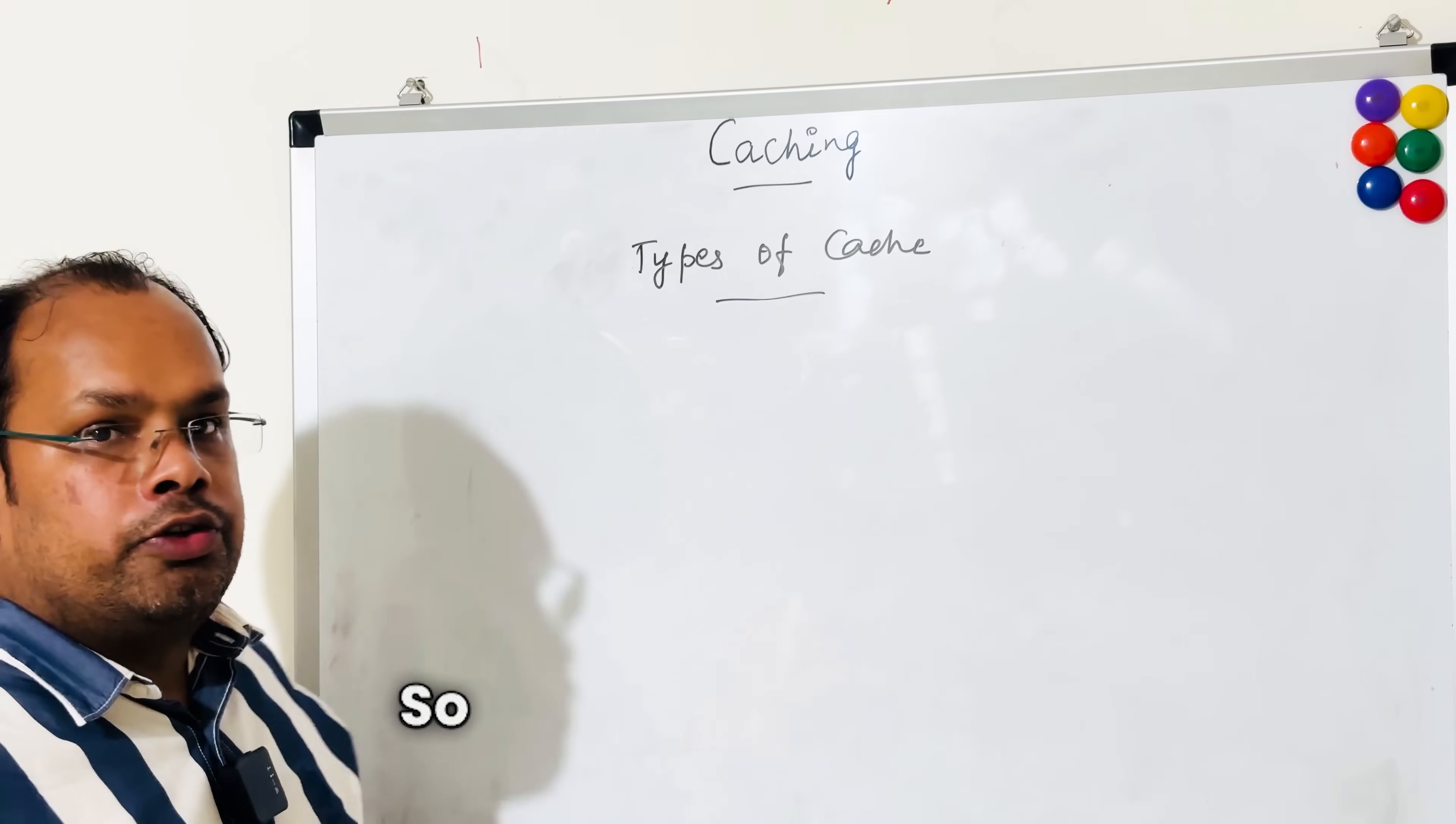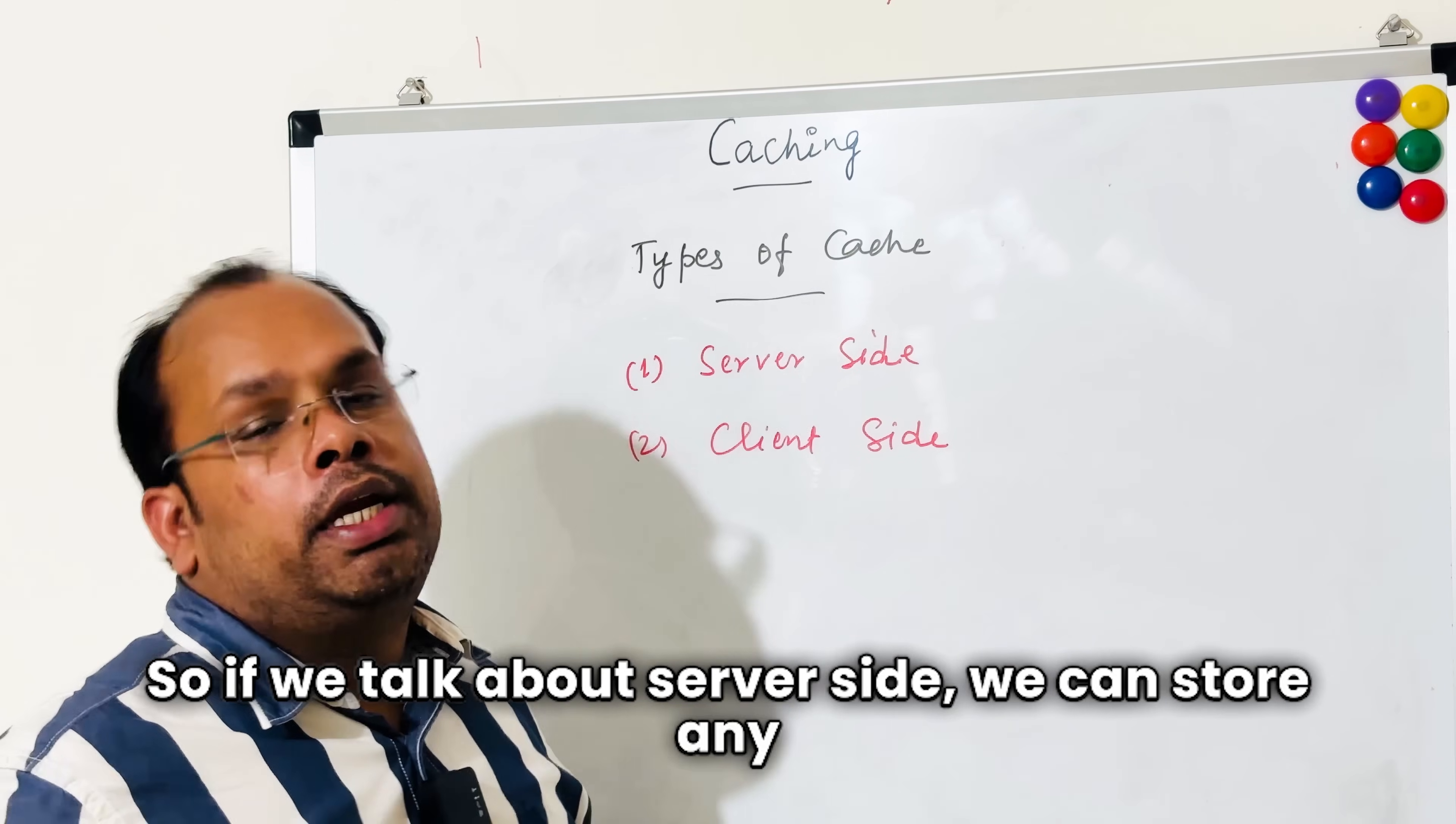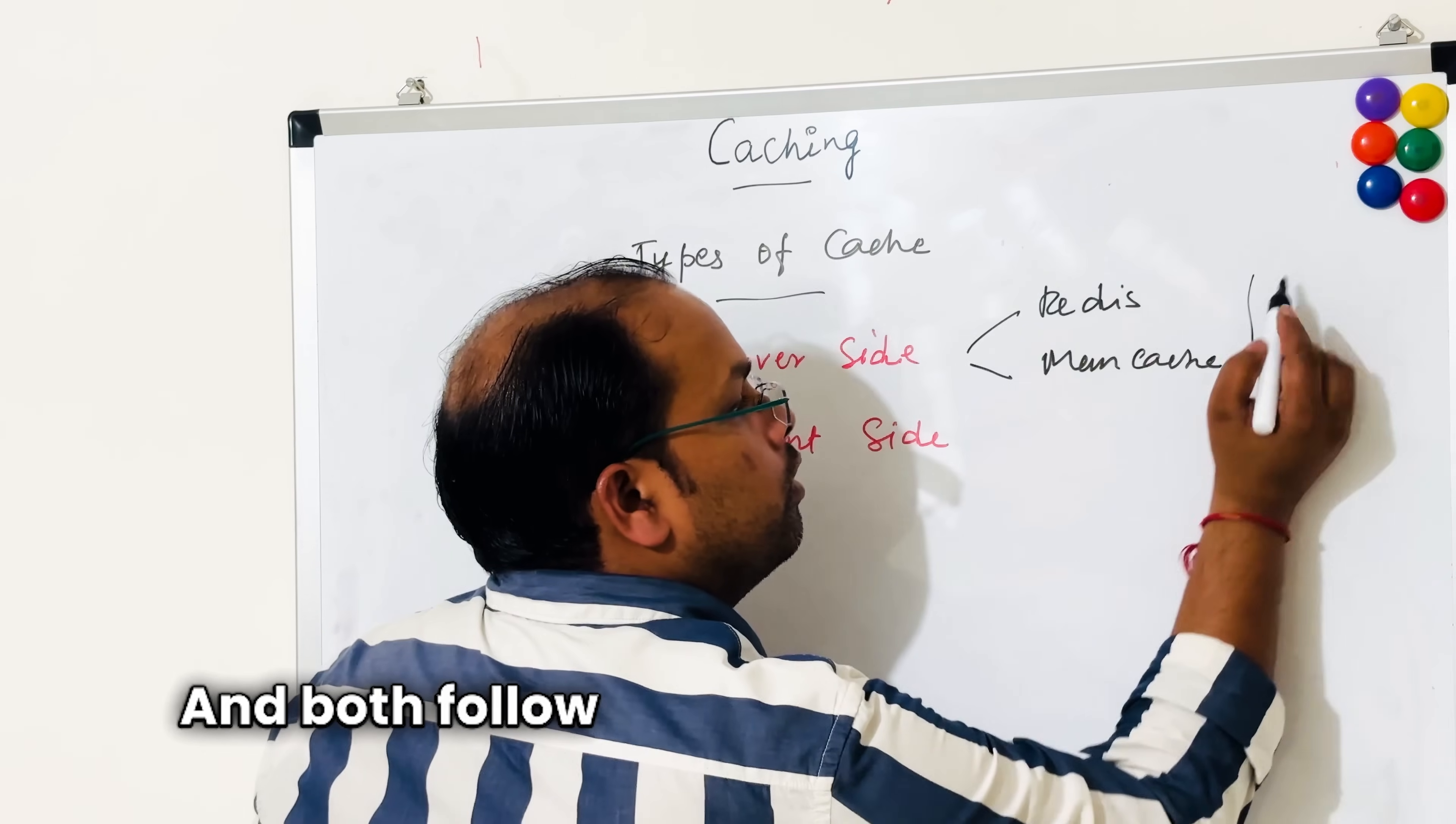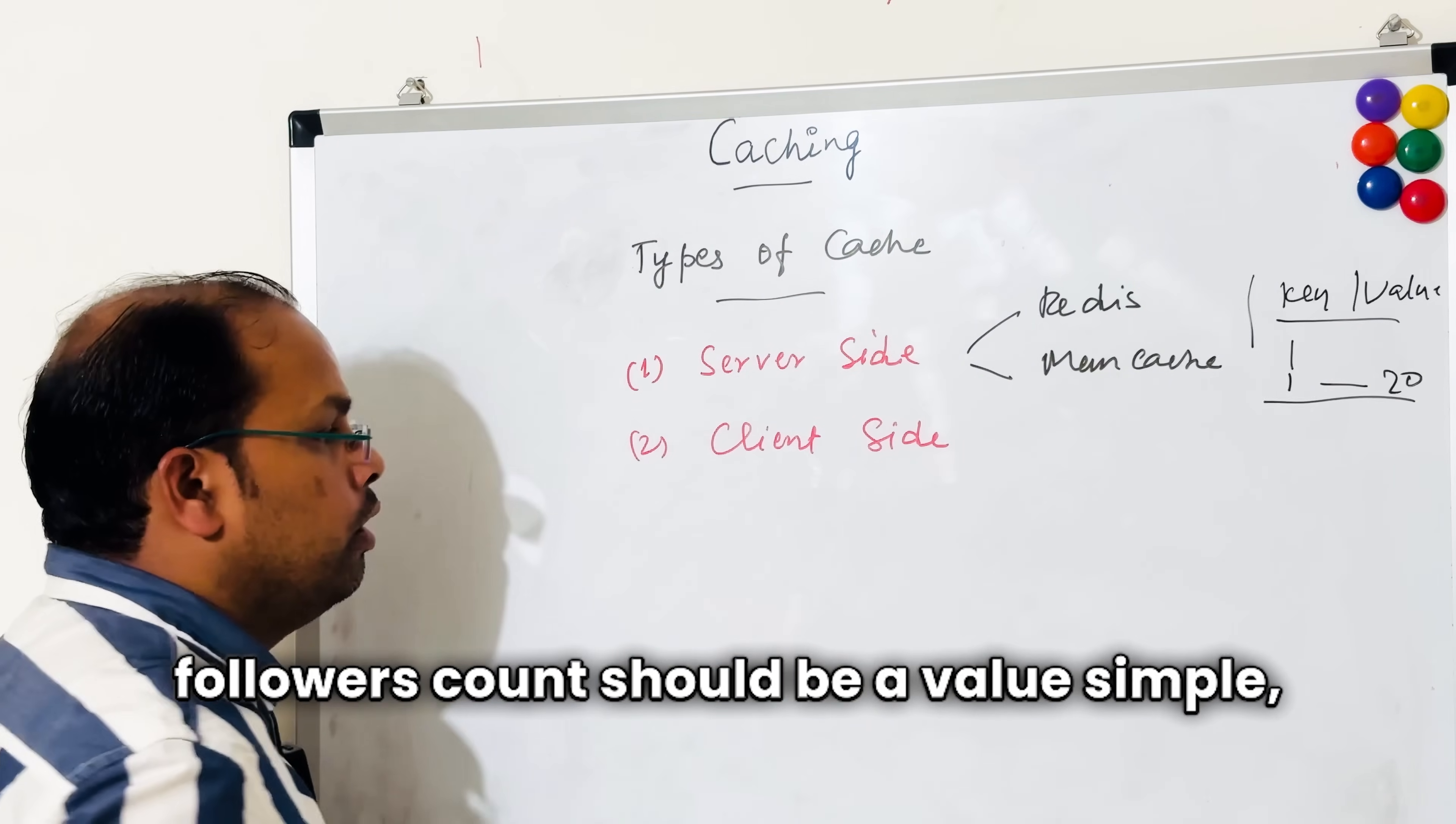Types of cache. There are two types: one is server-side and second is client-side. If we talk about server-side, we can store any data point in the form of key-value pair in memory. For example, we can use Redis. So we can store data against some key. For example, if you want a followers count against a user ID, user ID will be the key and followers count should be the value.